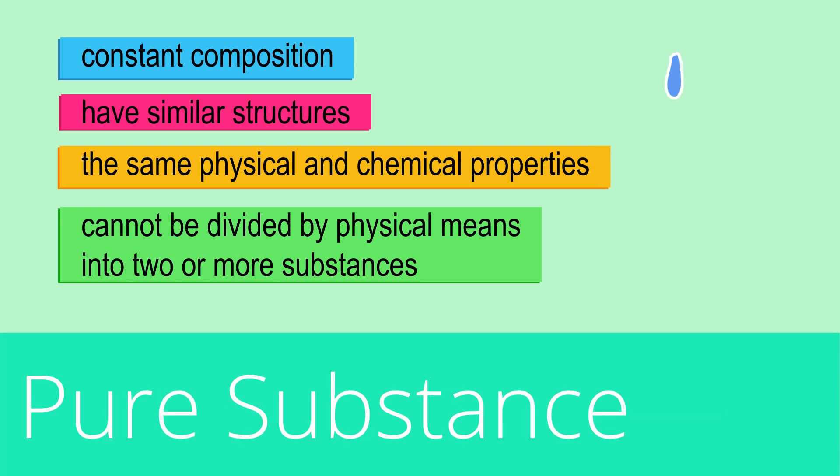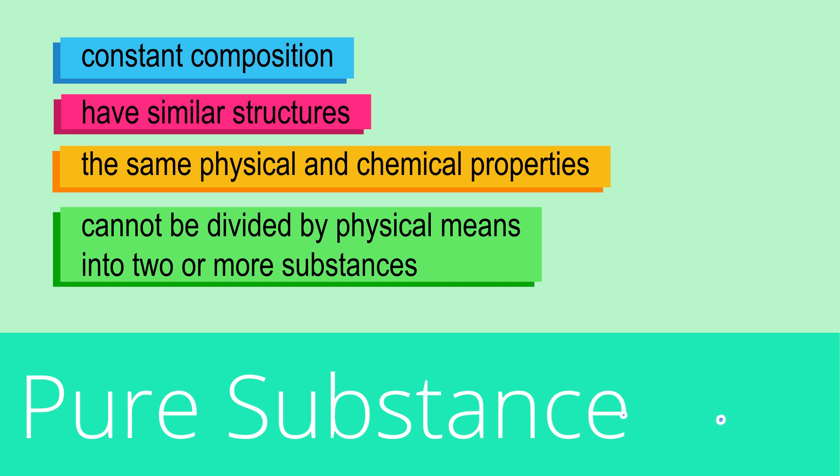Different types of matter with specified properties can be divided into two main categories: pure substances and mixtures. Pure substances are of constant composition. They have similar structures and the same physical and chemical properties. Pure substances cannot be divided by physical means into two or more substances.